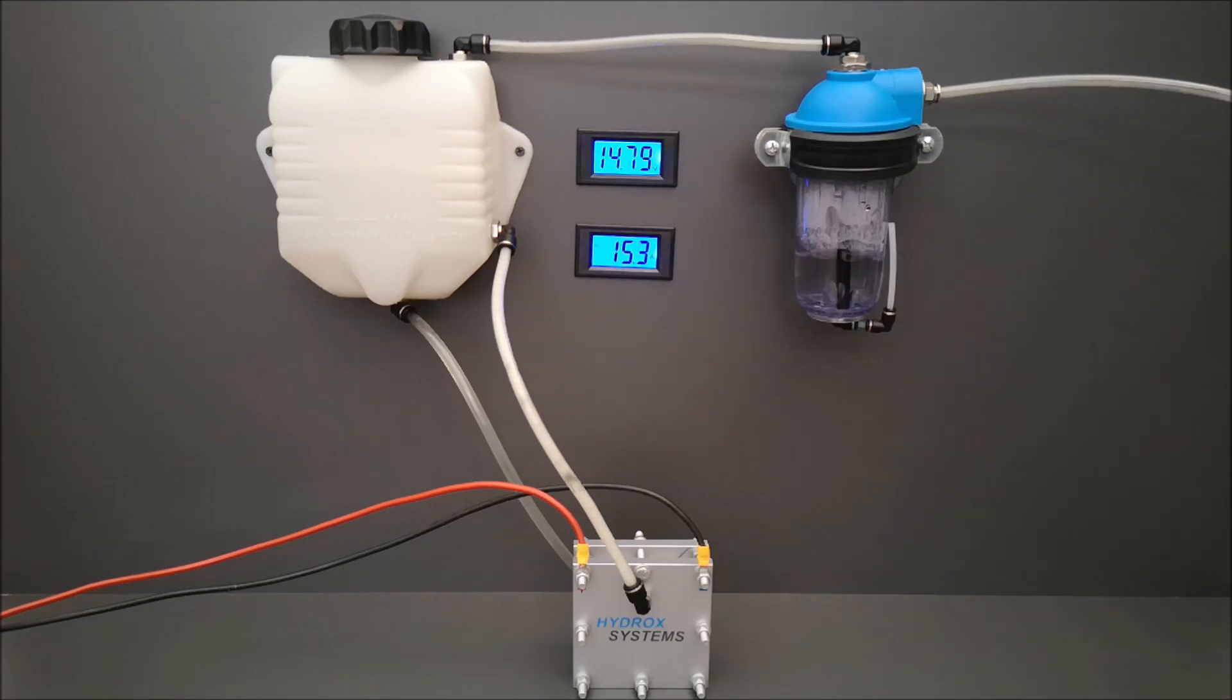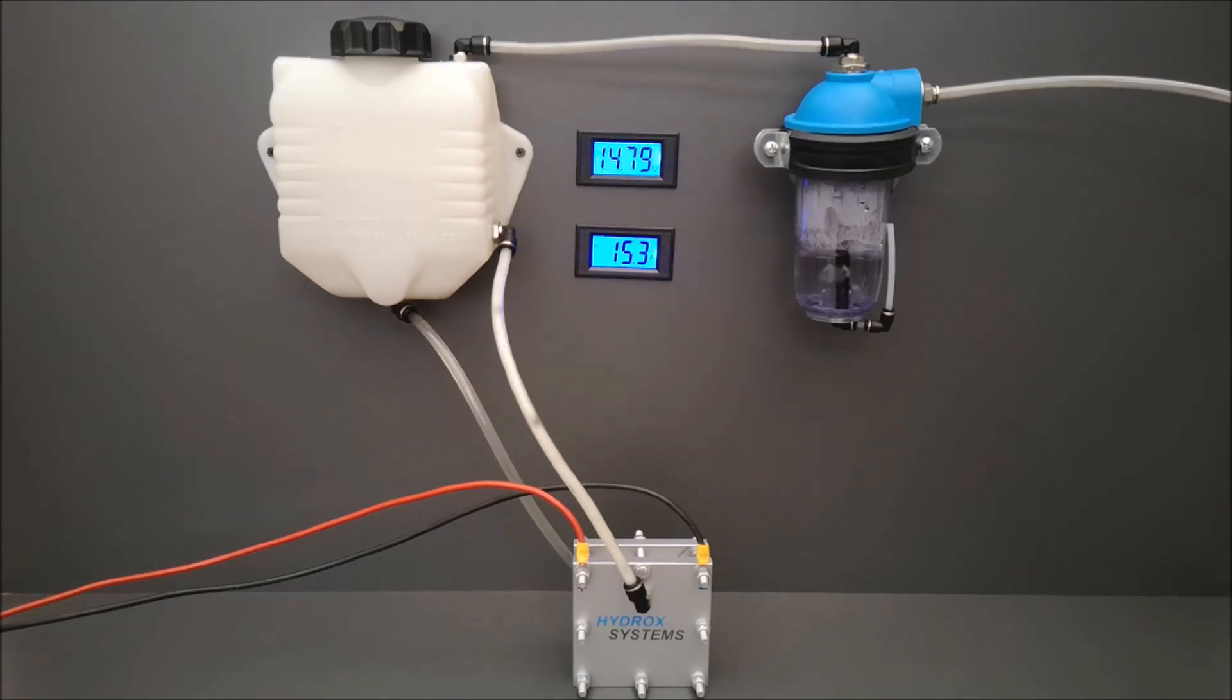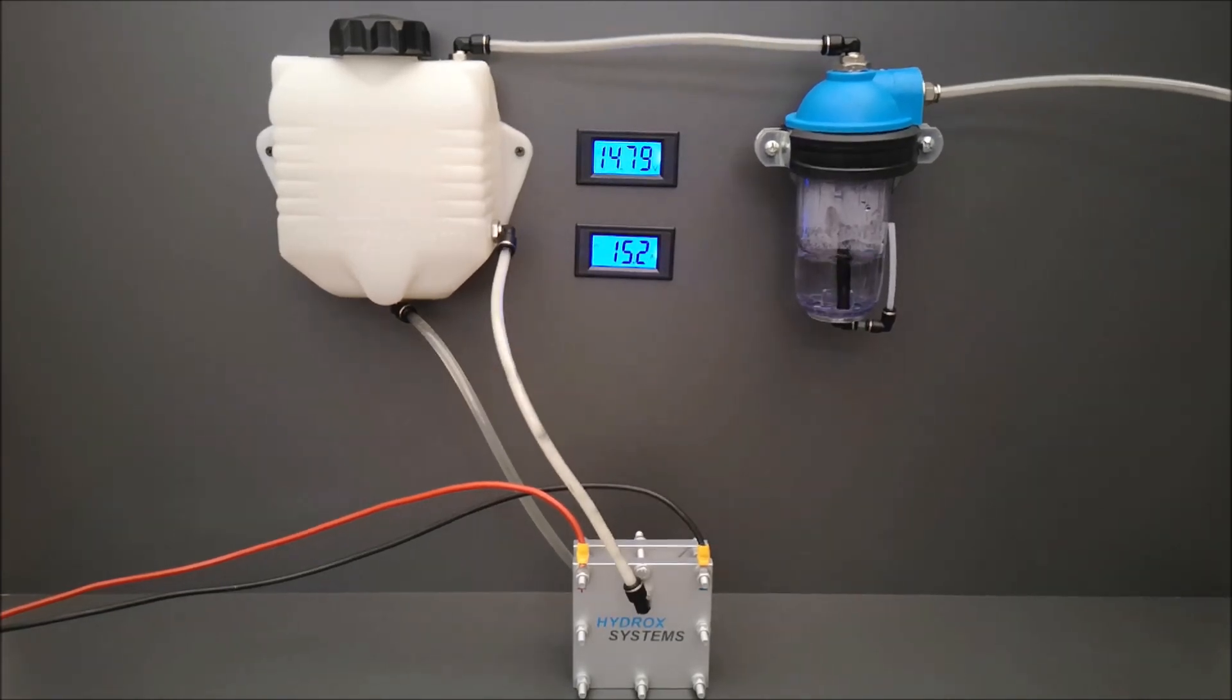So you can always find a place to mount it near the engine of your vehicle. This small beast is producing 0.6 liters of gas per minute. It has only six plates: one is positive, one negative, and four plates are neutral.